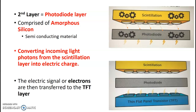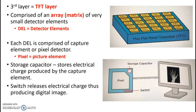Basically, the x-rays go through your patient, then your imaging plate takes those x-rays, turns them into light, turns them into an electric signal, and sends those electrons into the plate, which then creates your x-ray image. That brings us to your third layer, which is your TFT layer.